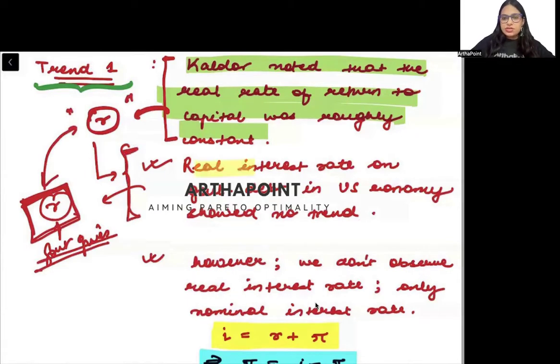In US, the real interest rate on government debt has shown no trend at all. It has remained constant over time. Therefore, we can go ahead and say that this also has remained constant.